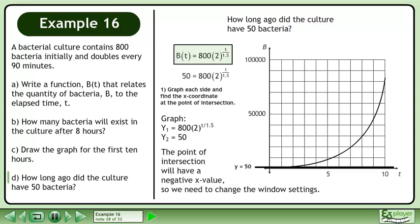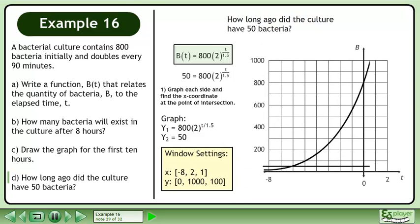The point of intersection will have a negative x value, so we need to change the window settings. Change the window settings as shown and redraw the graph. The point of intersection occurs at negative 6, 50. The answer is t equals negative 6. There were 50 bacteria 6 hours ago.